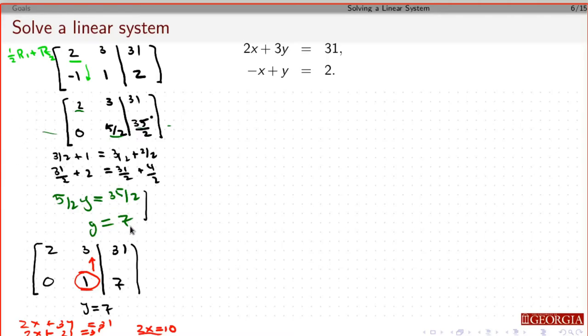I'm going to take row 1 and subtract 3 times row 2 to get a 0 above that pivot. I'm going to leave the bottom row alone. I will get 2 minus 3 times 0 is 2. 3 minus 3 times 1 is 0. Great. So 31 minus 3 times 7, that's 31 minus 21 is 10. That basically says 2x = 10. That's exactly what I have there.